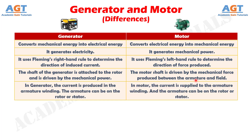Number 5. In a generator, the current is produced in the armature winding. The armature can be on the rotor or stator, whereas in a motor, the current is supplied to the armature winding, and the armature can be on the rotor or stator.